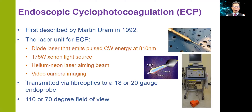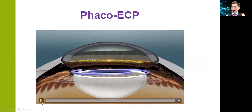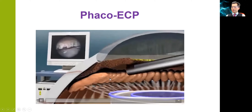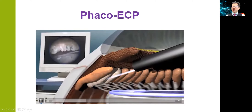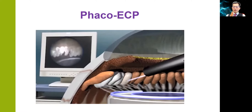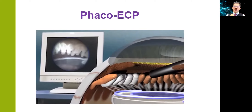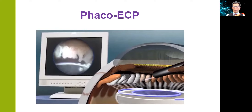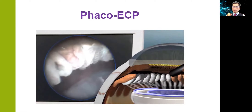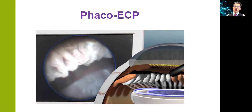Endoscopic cyclophotocoagulation involves the placement of diode laser burns of continuous wave energy at 810 nanometers during direct visualization of the ciliary processes. This animation shows how the procedure is done. Usually when combined with cataract extraction after lens implantation, you can deepen the anterior chamber with viscoelastic, then with the endoscope in the anterior chamber you directly visualize the ciliary processes and apply laser over them. As soon as the laser is applied, there is whitening of the ciliary epithelium and contraction of the ciliary processes. It is very important to cover the complete epithelial surface with laser marks, including all of the ciliary processes as well as the valleys in between.